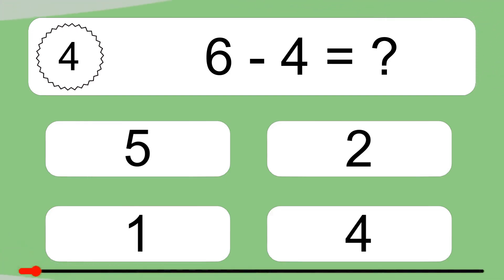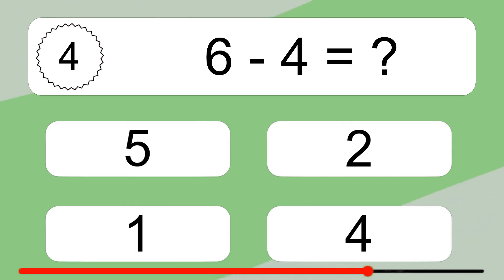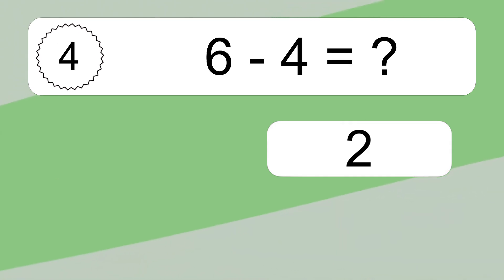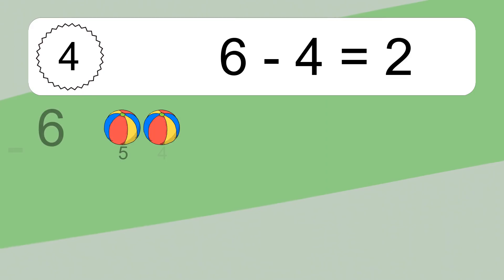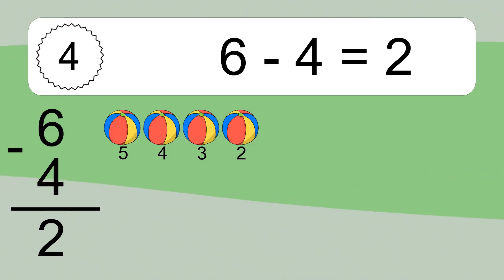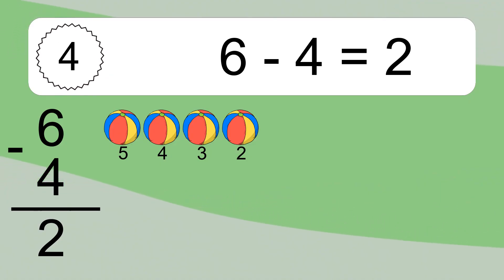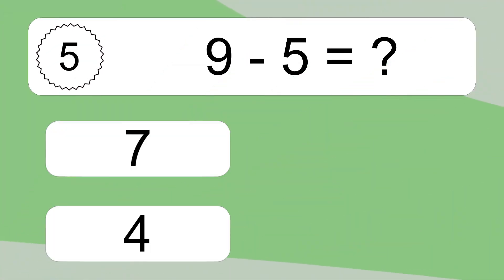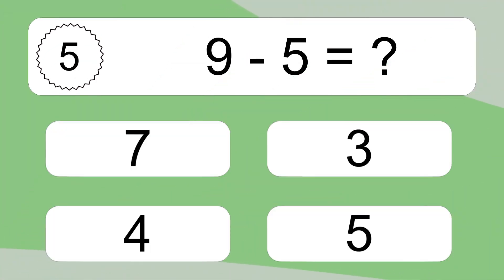6 minus 4 equals what? 6 minus 4 equals 2. Let's count it. 5, 4, 3, 2.